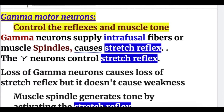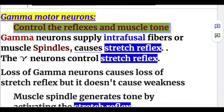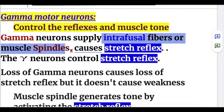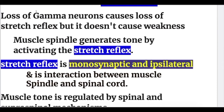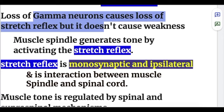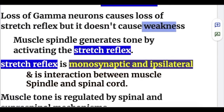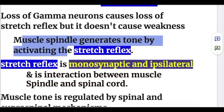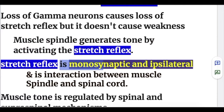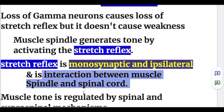The gamma motor neuron controls reflexes and muscle tone. It supplies the intrafusal fibers of muscle spindles, causing stretch reflexes. Loss of gamma motor neurons causes loss of stretch reflexes but does not cause weakness. Muscle spindles generate tone by activating stretch reflexes, which are monosynaptic and ipsilateral — an interaction between the muscle spindle and the spinal cord.